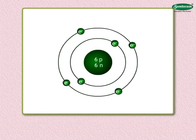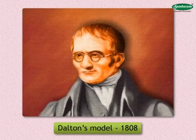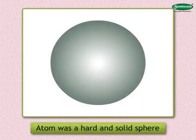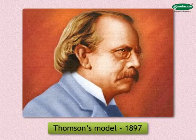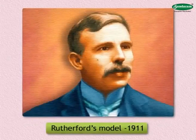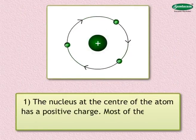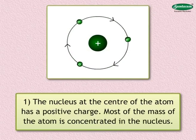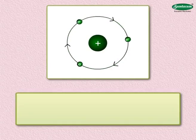Let us study the stages of discovery of the constituents of an atom. The first is Dalton's model, proposed in 1808 — the atom was a hard and solid sphere. The second is Thompson's model, proposed in 1897 — as the positive and negative charges are equal, the atom as a whole does not have any resultant charge. The third is Rutherford's model, proposed in 1911 — the nucleus at the center has a positive charge, electrons revolve in specific orbits, and the nucleus is very very small.